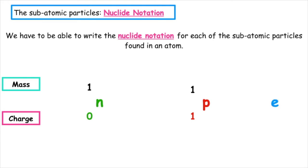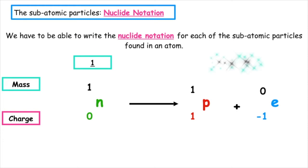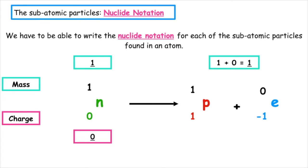Electrons have a charge of minus one and a mass of zero. One neutron, which is found inside the nucleus and is neutral, can split up to form a positive particle, which is our proton, and a negative particle, which is our electron. The top number on the left-hand side of the equation is equal to one, and the combined mass total on the right-hand side is also one. The total charge on the left-hand side is zero, and therefore the total charge on the right-hand side should also equal zero, to ensure that we have balanced nuclear equations.